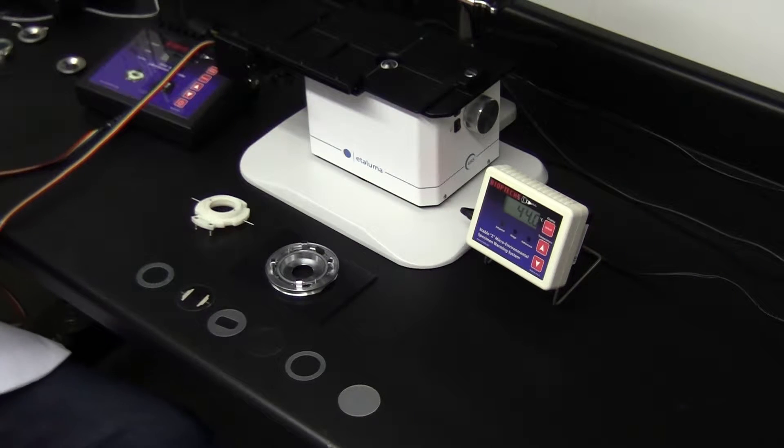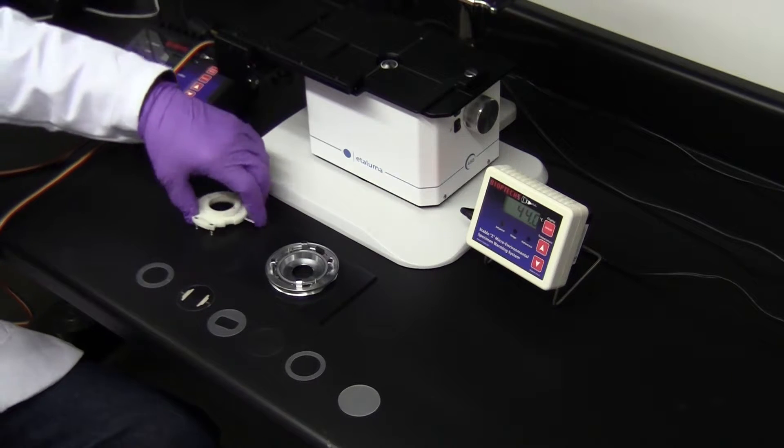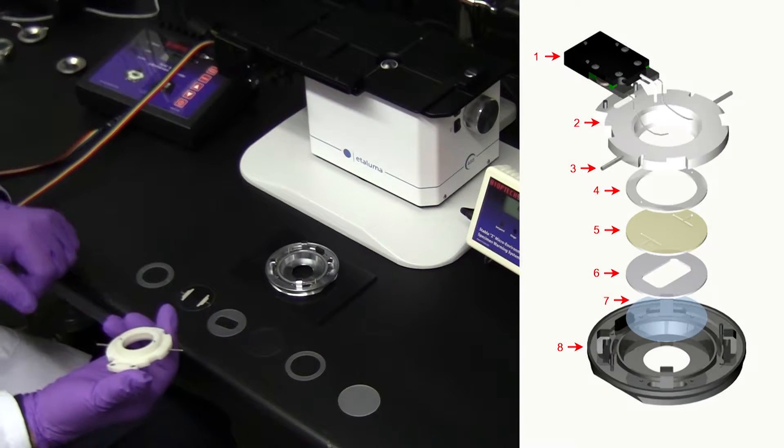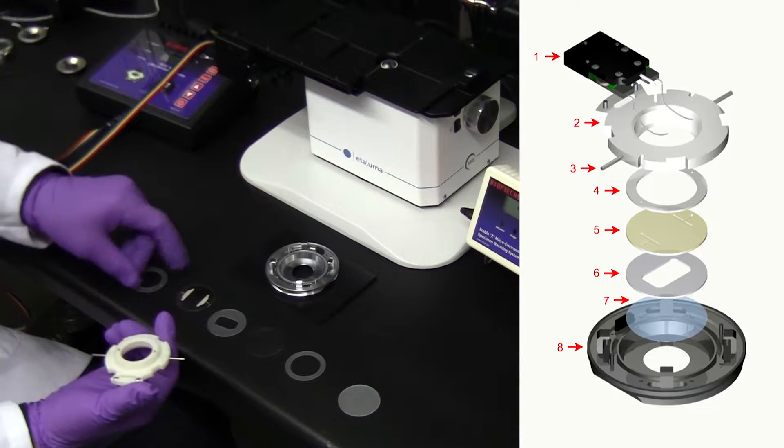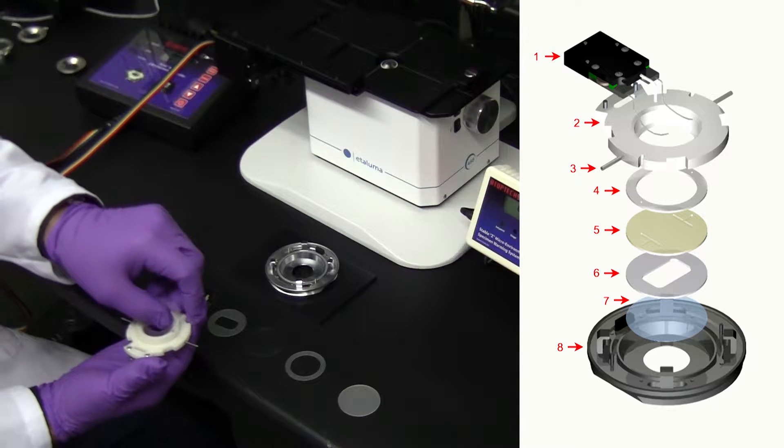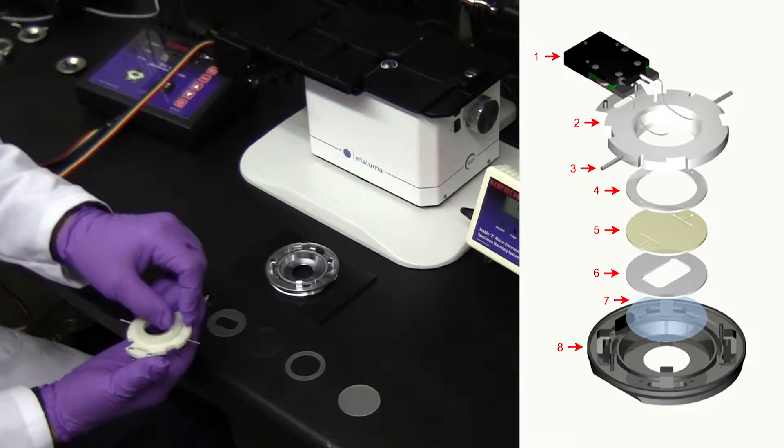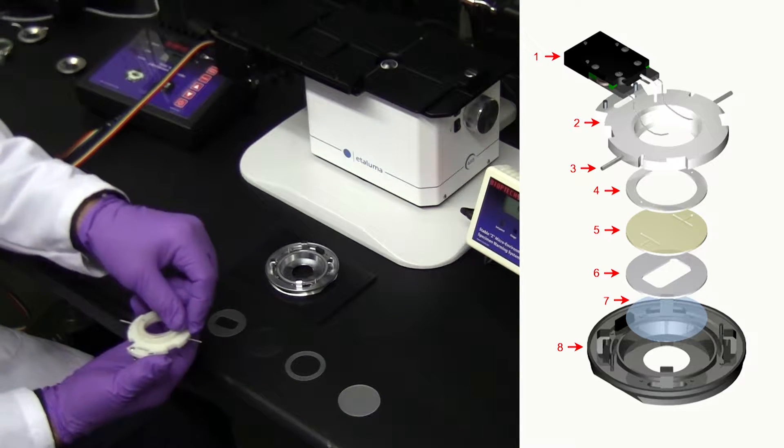They are assembled without the need of tools. I'll start by turning the top upside down, exposing the inflow and outflow perfusion ports. When assembling, a gasket is placed on the bottom surface of the top to seal the perfusion flow that passes through the optical cavity.